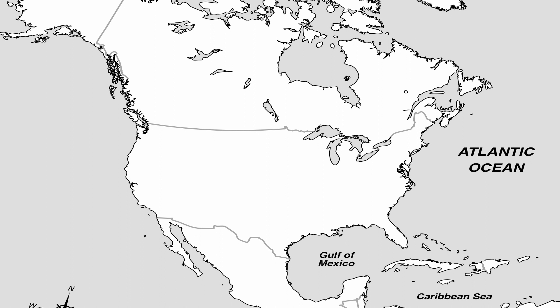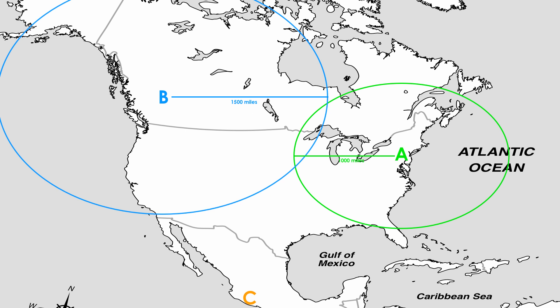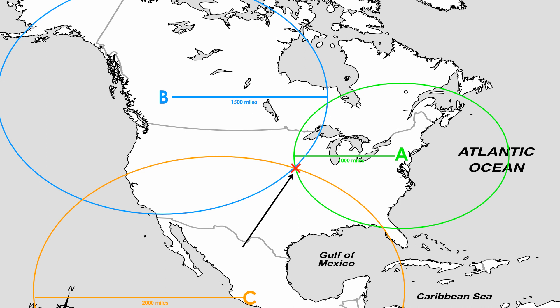Let me demonstrate with a map of North America. You have station A, B, and C. A is 1,000 miles away from the epicenter — not sure exactly where it is, so a circle is drawn around letter A. The earthquake can occur anywhere along that circle. One station gives you just distance, not direction. B is 1,500 miles away; you draw a circle around B, and now your two circles intersect at two possible points. You need a third seismic station: C is 2,000 miles away. You draw a circle around C with a 2,000-mile radius, and the three circles will intersect right in the center of the country — right where the black arrow is. That is your epicenter.